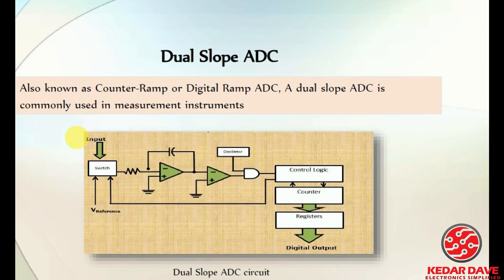The dual slope ADC is also known as the counter ramp or digital ramp ADC. It is commonly used in measurement instruments — it is generally used for measurement purposes.